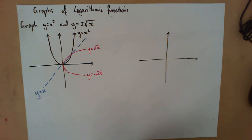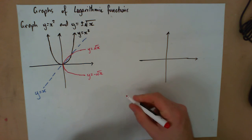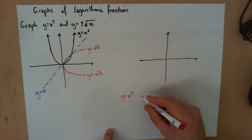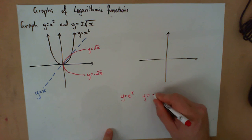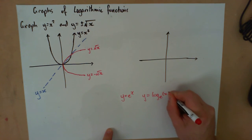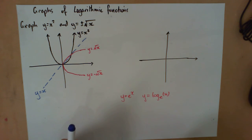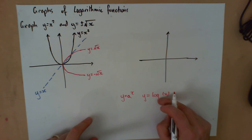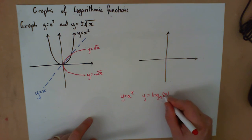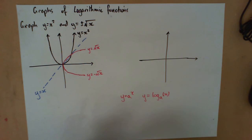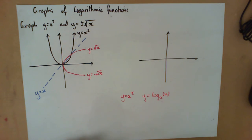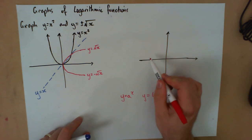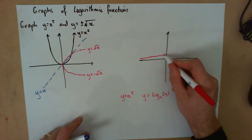Now we need to think about what we know about logs. We know that y equals e to the x and y equals log to the base e of x are inverses. Or more generally, y equals a to the power of x and y equals log to the base a of x are inverses — it doesn't matter what that base is. Well, if they're inverses, we should expect something similar to happen with our graphs.